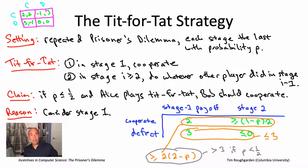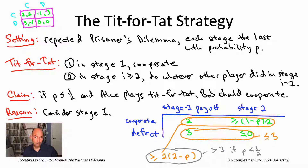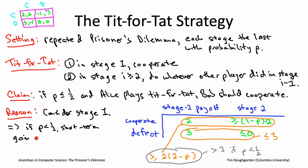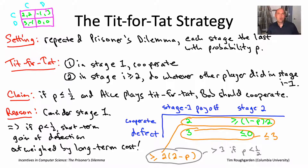What that means is that where the continuation probability is more than 50%, Bob should cooperate in stage one. He could defect and get a short-term gain in stage one, but that would be outweighed by the long-term cost, because it would trigger Alice's future defection. I've done this argument focusing on just the first two stages, but the argument holds completely generally.